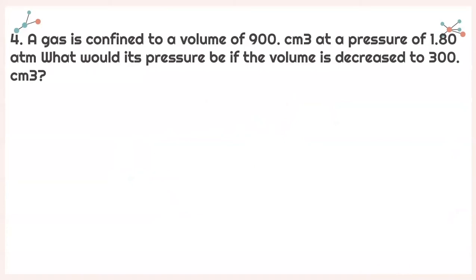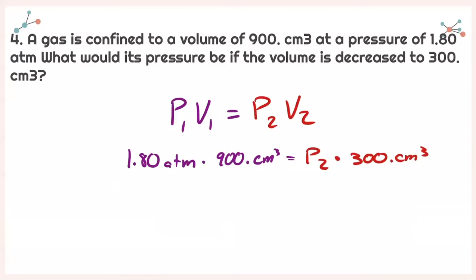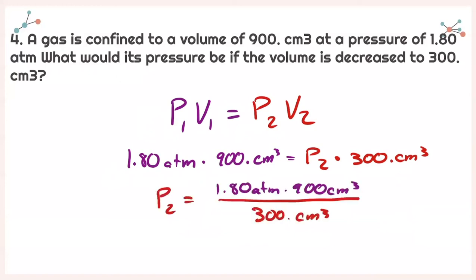For number 4, a gas is confined to a volume of 900 centimeters cubed at a pressure of 1.80 atmospheres. What would its pressure be if the volume is decreased to 300 centimeters cubed? Same equation: P1 times V1 equals P2 times V2. Isolating P2 and plugging into my calculator, with sig figs I get a final value of 5.40 atmospheres. Don't forget to cancel out your units so your ending units match what you are solving for.